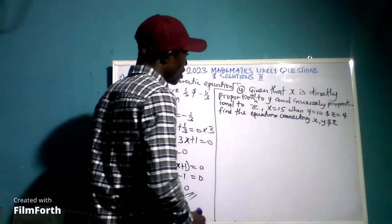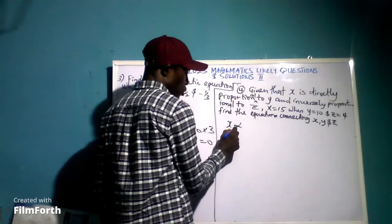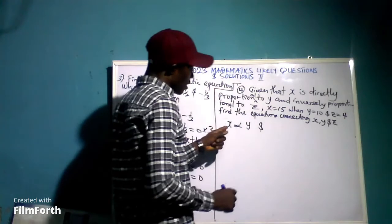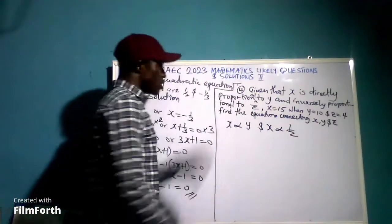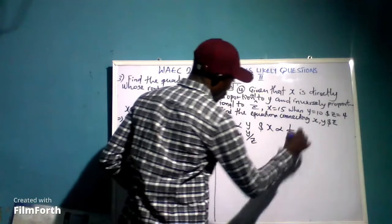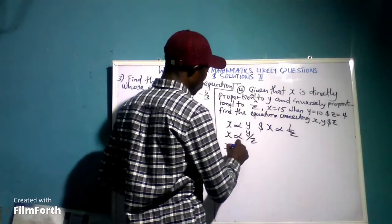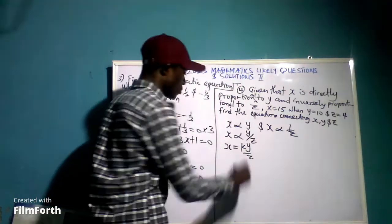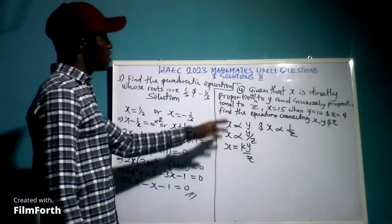By interpretation, if x is directly proportional to y and inversely proportional to z, we combine this to say x is directly proportional to y over z. To remove the proportional sign, we introduce the proportional constant k, so that the proportional sign changes to an equals sign, giving x equals k times y over z.